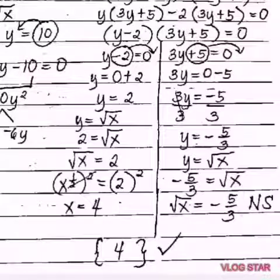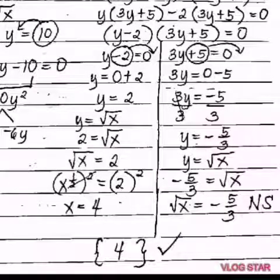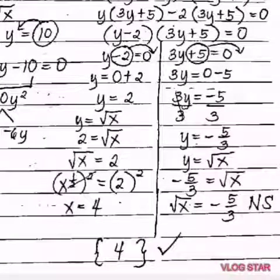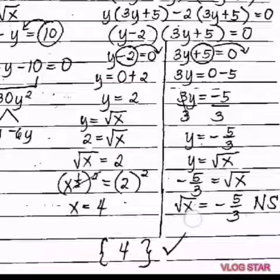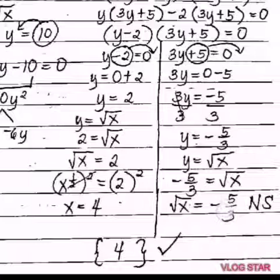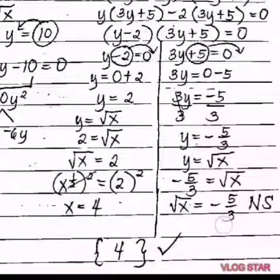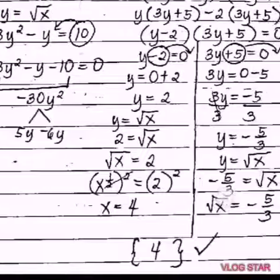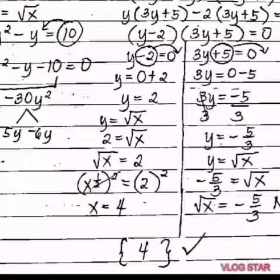For y equals negative 5 over 3, substituting into y equals square root of x gives square root of x equals negative 5 over 3. We will not square both sides here because the principal root is negative — it is negative 5 over 3. If the principal root is negative, there is no solution; this value is not a solution for the given equation. Therefore, the only solution is x equals 4.